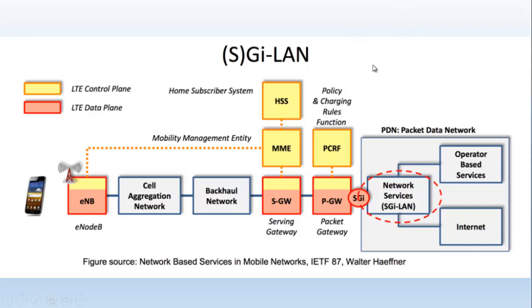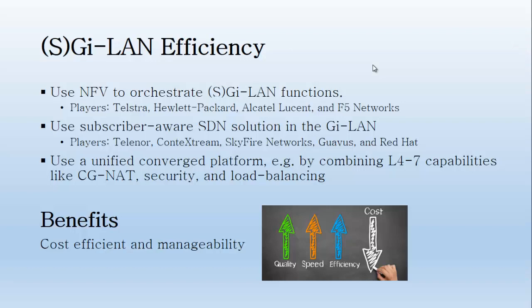Let's look at if there could be an efficiency of this SGI LAN — how effectively can we utilize the SGI LAN. Remember, the whole idea of EPC architecture is to have a flat network where you have the different parts of the network being utilized on a single platform. There are a couple of ways in which we can achieve SGI LAN efficiency, and these are basically from using NFV — Network Function Virtualization — to orchestrate SGI LAN functions.